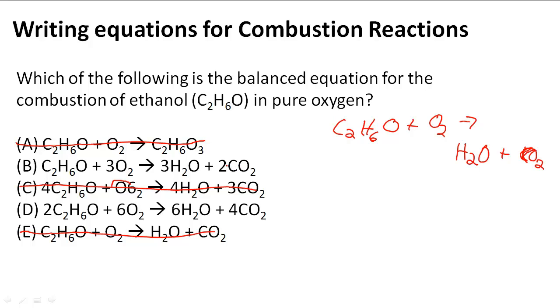So here, let's start with carbon - two carbons, two carbons. Remember that there's a one here, so I would just multiply two times one and I get two. And then we have six H's, and if I do three times two, I get six H's on this side.